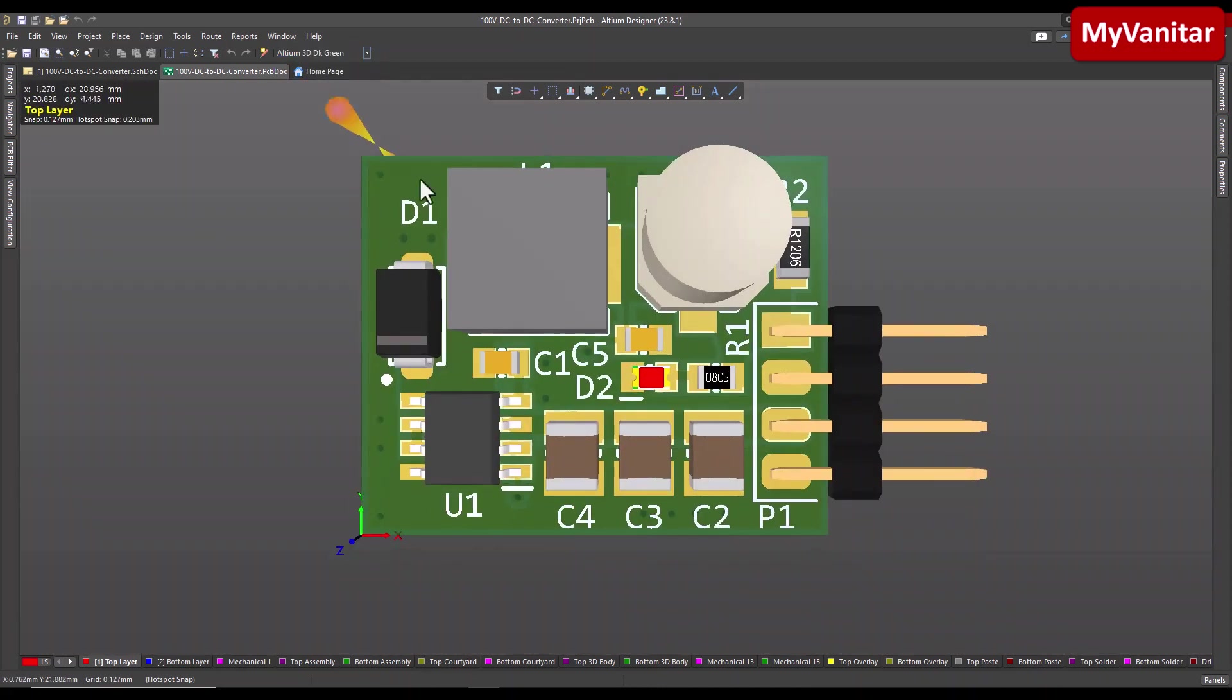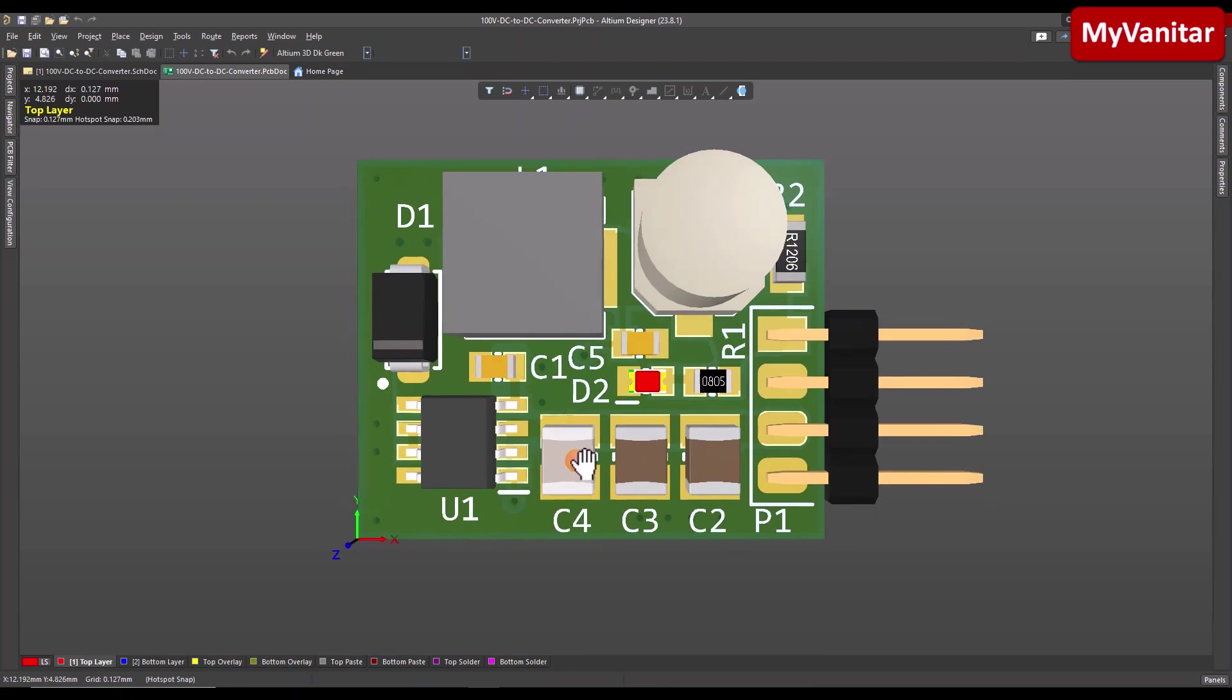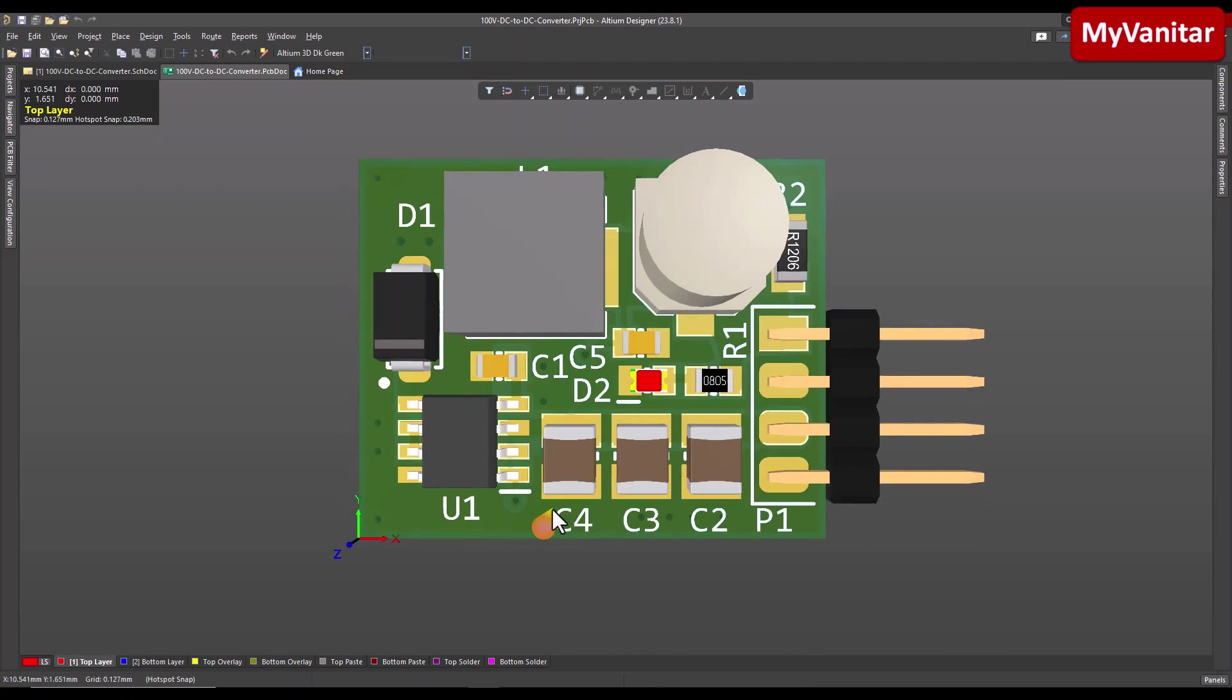It's better that you separate your power supply switching power supply and mount them separately using headers or similar. So let's come back to the board itself. Let me show you the board in 3D. The first point is that the smallest capacitor should be as close as possible to the buck converter chip.